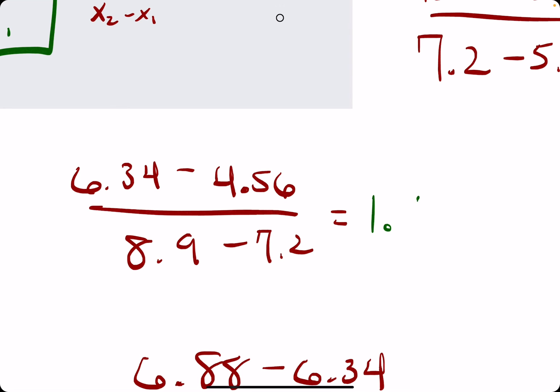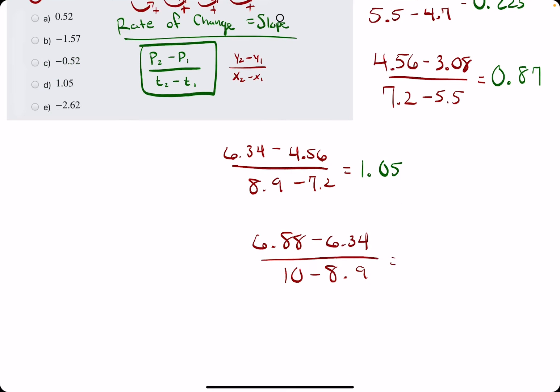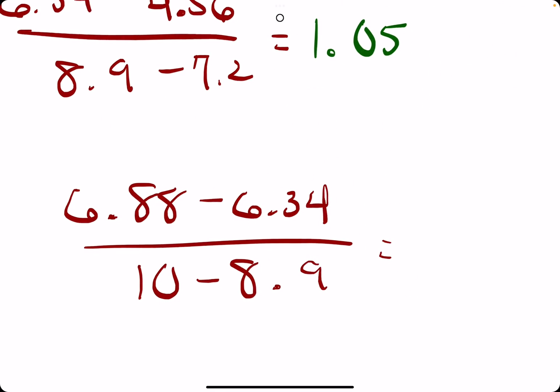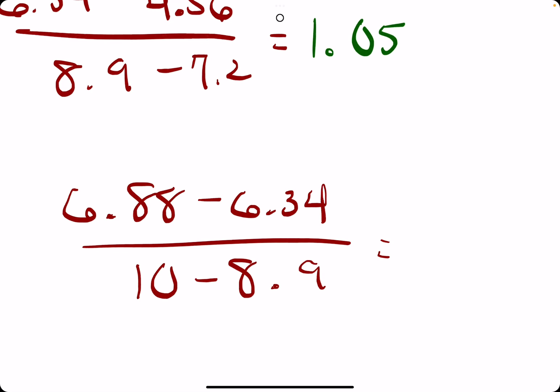So far so good. 6.88 minus 6.34, 0.54, and then we're dividing that by 1.1, and that gives us about 0.49.